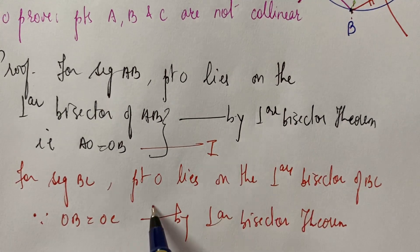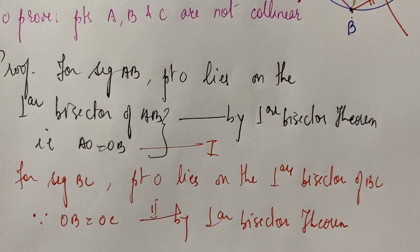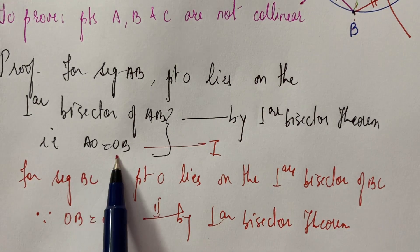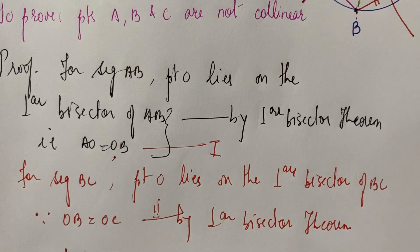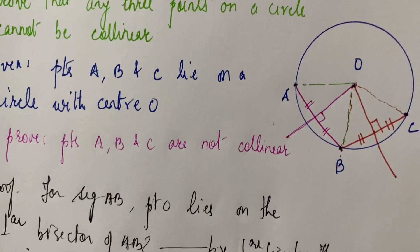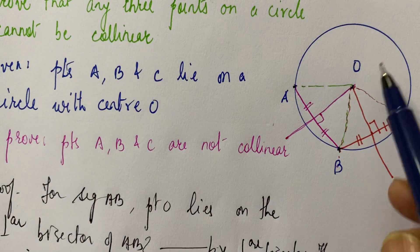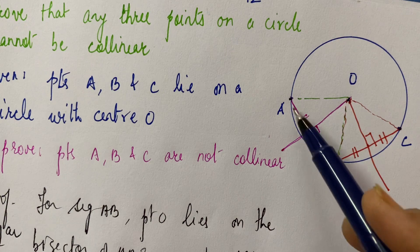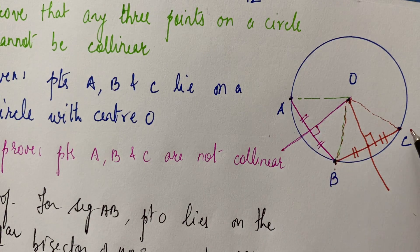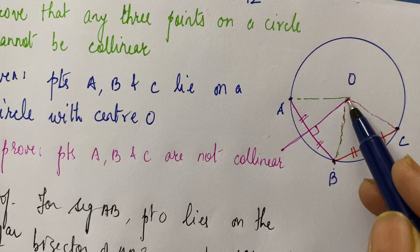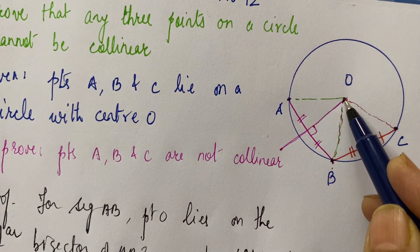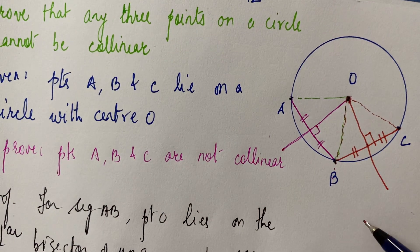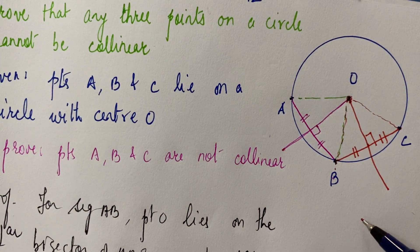Suppose equation 1 is AO = OB and equation 2 is OB = OC. This means point O lies on the perpendicular bisectors of both AB and BC. So point O is the point of intersection of the perpendicular bisectors of AB and BC.